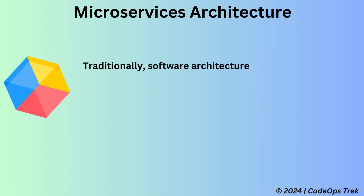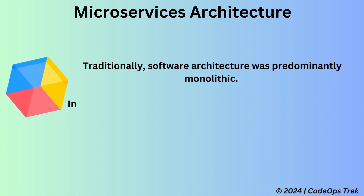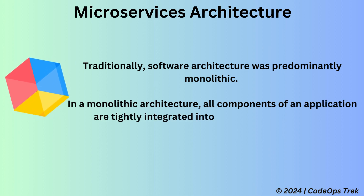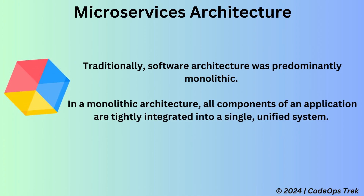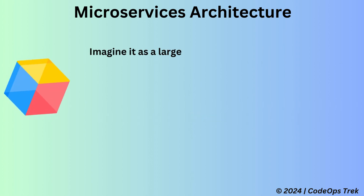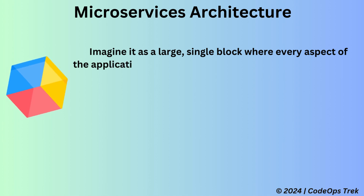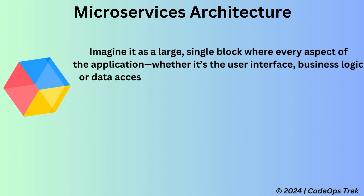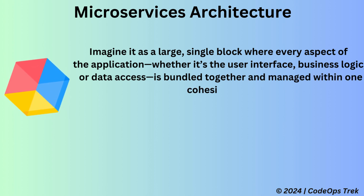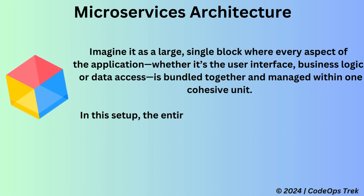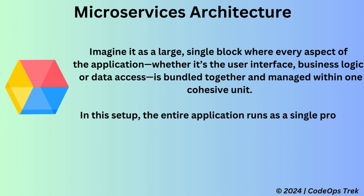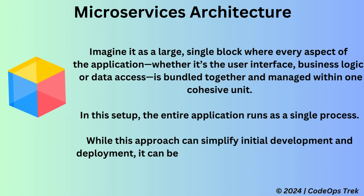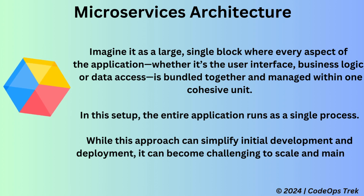Traditionally, software architecture was predominantly monolithic. In a monolithic architecture, all components of an application are tightly integrated into a single, unified system. Imagine it as a large single block where every aspect of the application — whether it's the user interface, business logic, or data access — is bundled together and managed within one cohesive unit. In this setup, the entire application runs as a single process. While this approach can simplify initial development and deployment, it can become challenging to scale and maintain as the application grows.